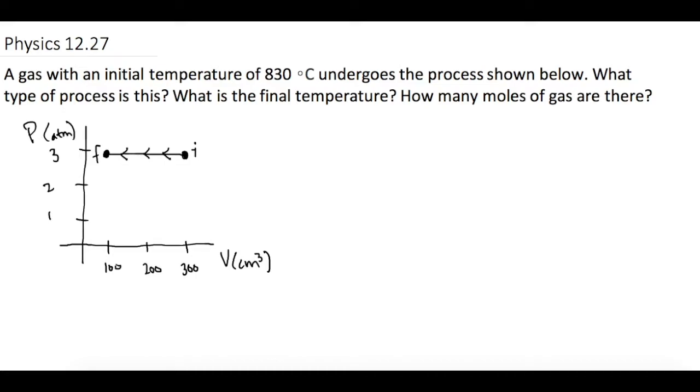A gas with an initial temperature of 830 degrees Celsius undergoes the process shown below. What type of process is this? What is the final temperature? And part C, how many moles of gas are there?